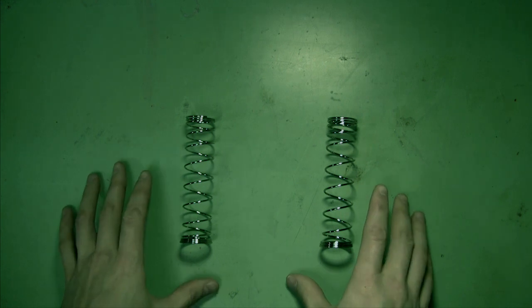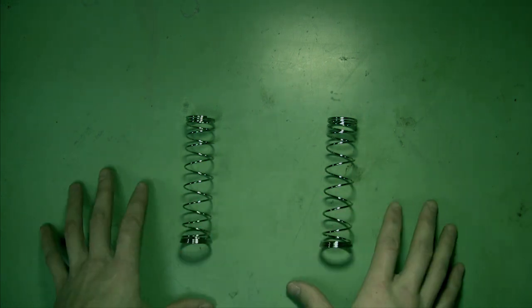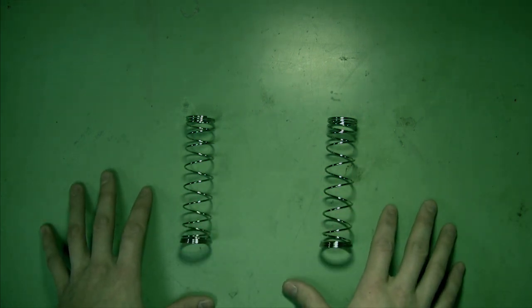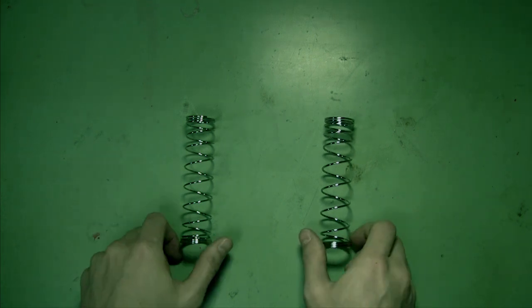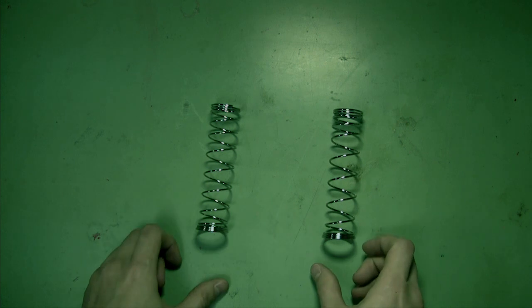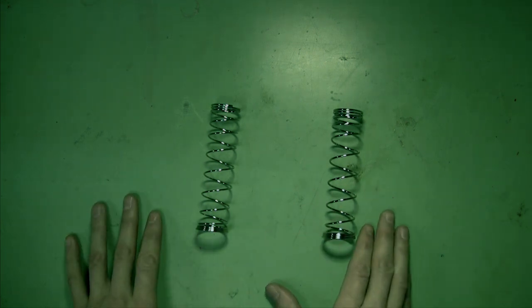In case you're unaware, both the Quick 16 and the Mod 6 are very difficult to disassemble and reassemble. So just keep that in mind if you decide to mod the springs or do any sort of modification for those 2 blasters.